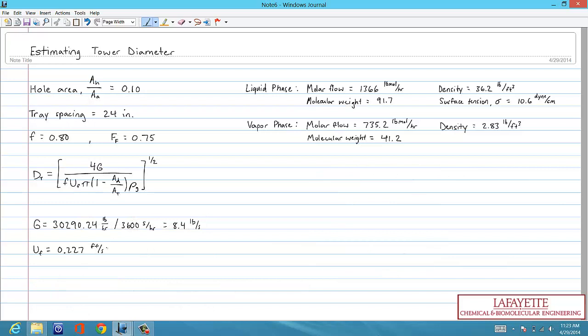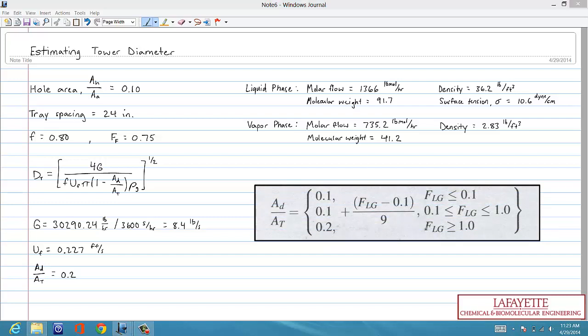Next, we need to solve for the ratio of the downcomer area to the cross-sectional area of the tower. This can be estimated using the following correlation. Since our calculated f sub lg is greater than 1, a sub d over a sub t is equal to 0.2.